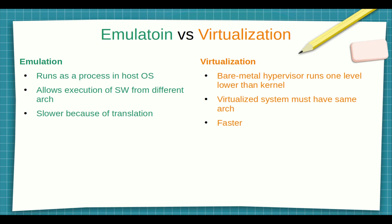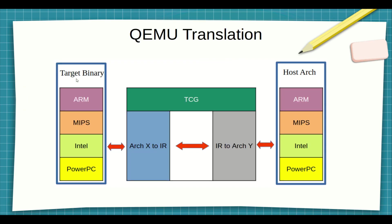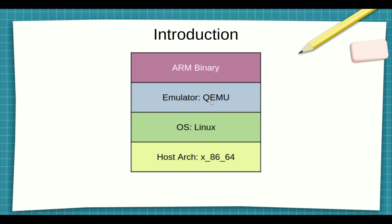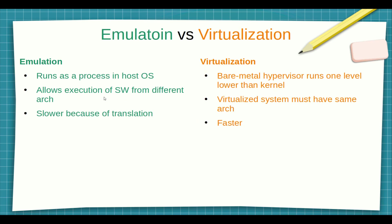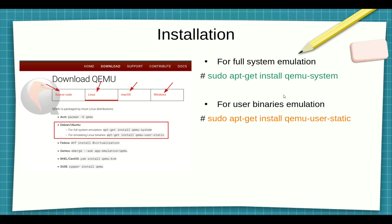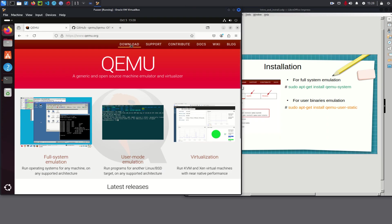A quick comparison between emulation and virtualization: with emulation, the emulator runs as a process in the host operating system — as we've seen, it's just a process within the Linux operating system. It allows software from different architectures to run on the host, but it is slower because of all this translation. Virtualization is a little different. A bare-metal hypervisor runs one level lower than the kernel, the virtualized system must have the same architecture as the host, and it is faster.